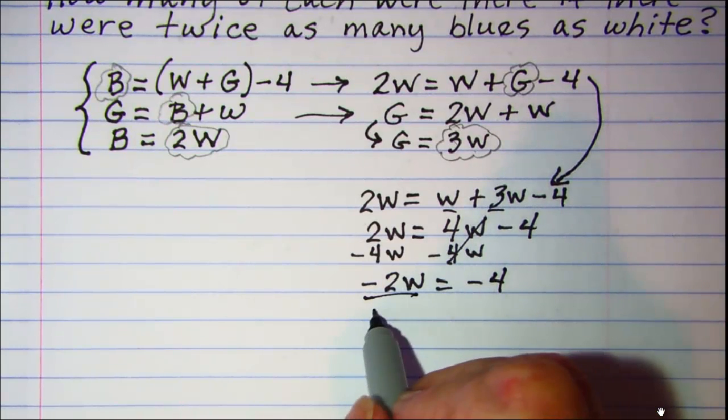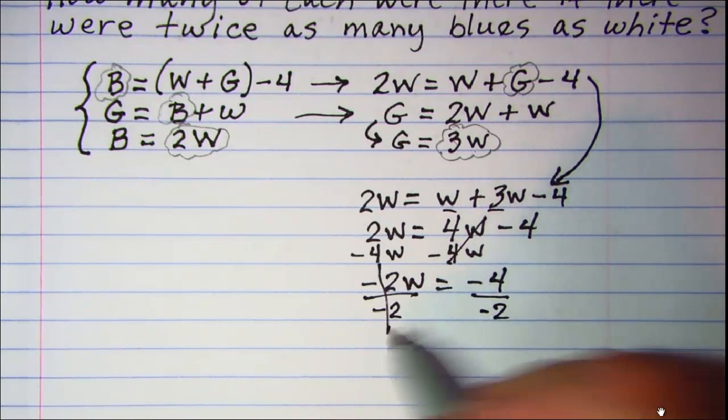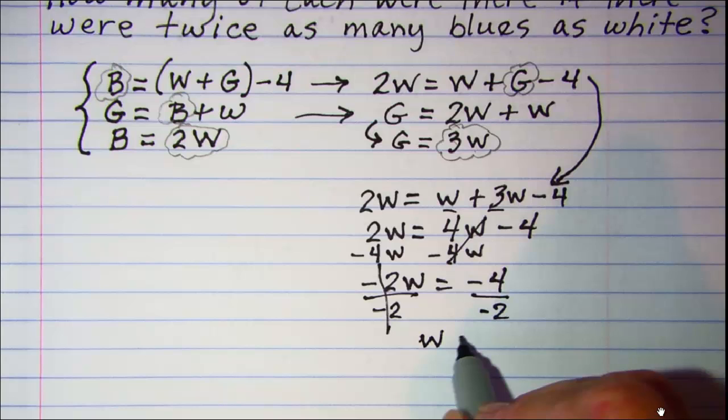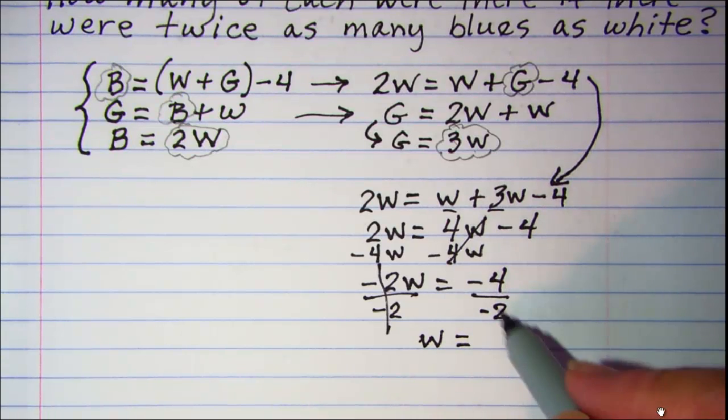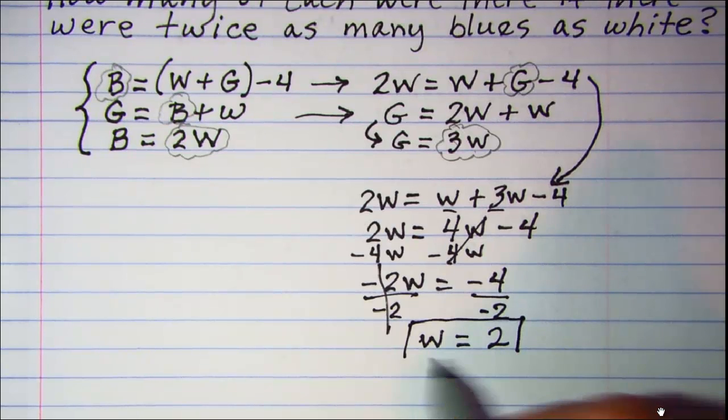Dividing both sides by negative 2. These will cancel. And I get W is equal to 2. So my number of whites is 2.